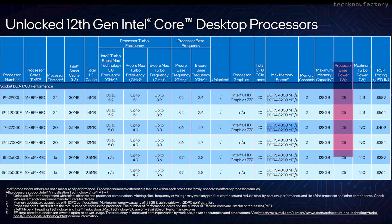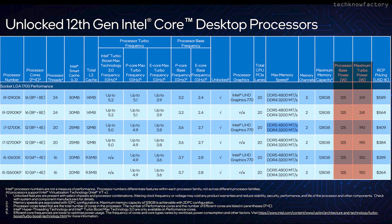The last columns cover power requirements, with two values: PBP and MTP. All 6 launch processors share the same 125W PBP. The i5-12600K series is 125W to 150W MTP. The i7-12700K and 12700KF are 125W to 190W MTP. The i9-12900K and KF have a maximum MTP of 240W.